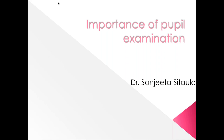For every patient that comes to us, a simple torchlight examination of the pupil is mandatory. In another case scenario, a 30-year-old female comes with mild pain and heaviness in the eye, and all examination including visual acuity is normal. Sometimes early cases of optic neuritis where the visual acuity may still be normal can be detected early if we do a pupil evaluation.